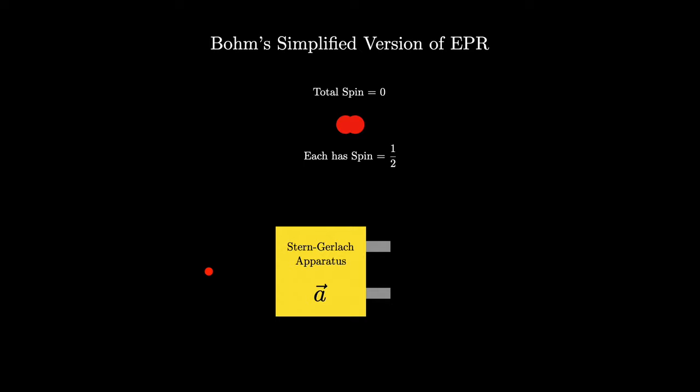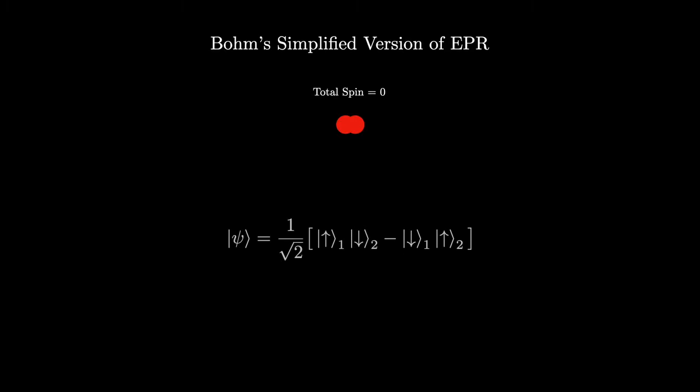So in this simpler example, consider a pair of particles that form a system with total spin equal to zero. Each of these particles are spin one half. What it means for a particle to be spin one half is that if you send it through a Stern-Gerlach apparatus oriented in any direction, there are only two possibilities. Either it will be deflected up with the probability of one half, or it will be deflected down with the same probability. The way to describe this system in conventional Brockett notation is as follows, where this is often referred to as the singlet state.